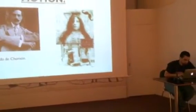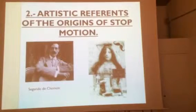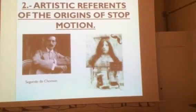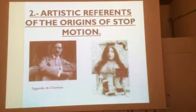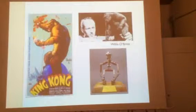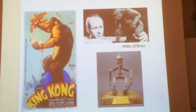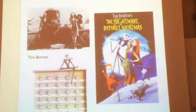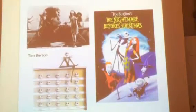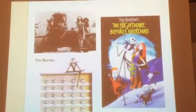One of the key figures who used this technique was the Spanish filmmaker Segundo de Chomón, who made the film 'The Electric Hotel' in 1908 — considered one of the first films to use this technique. Willis O'Brien is also well known for animating King Kong in 1933, and is further associated with the name of Tim Burton, who is recognized worldwide for his film 'The Nightmare Before Christmas'.